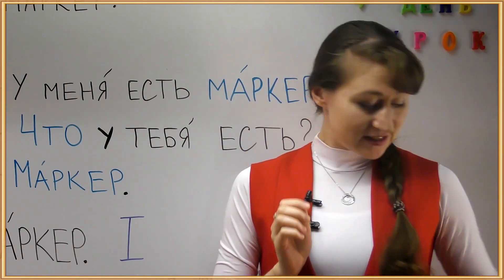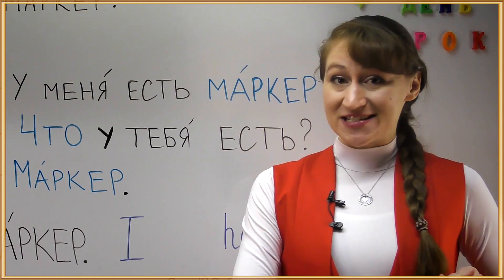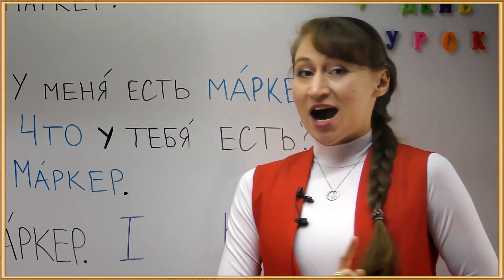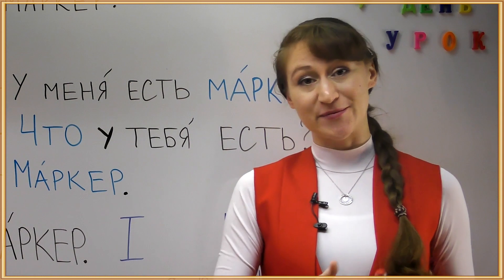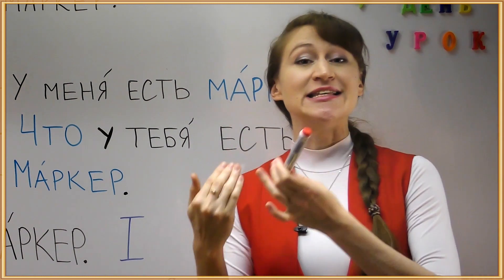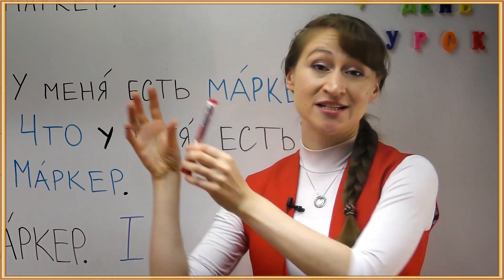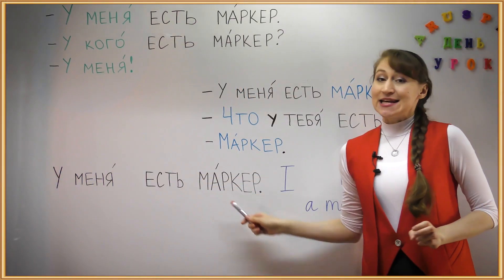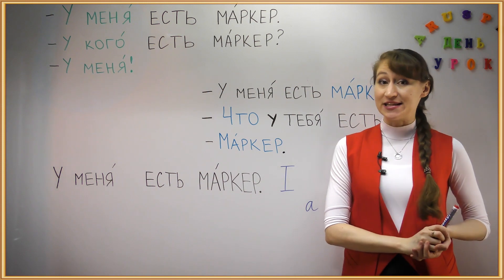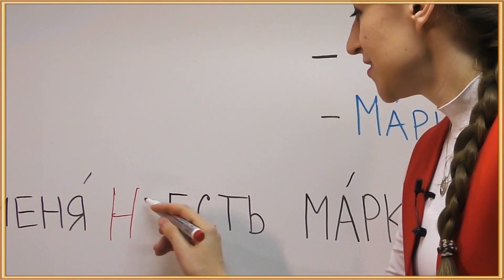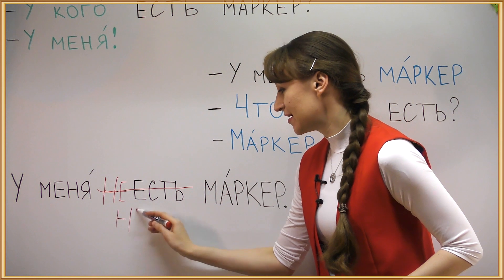Imagine that I didn't have a marker here. What would I say? We need to negate this sentence: 'I don't have a marker.' How do we negate in Russian? Normally we put NE before the verb — for example, 'today I don't work,' literally 'I not work.' Here, since we also have a verb YES (exists), we will negate this. But here's the thing — we don't say НЕ ЕСТ. We say simply НЕТ.